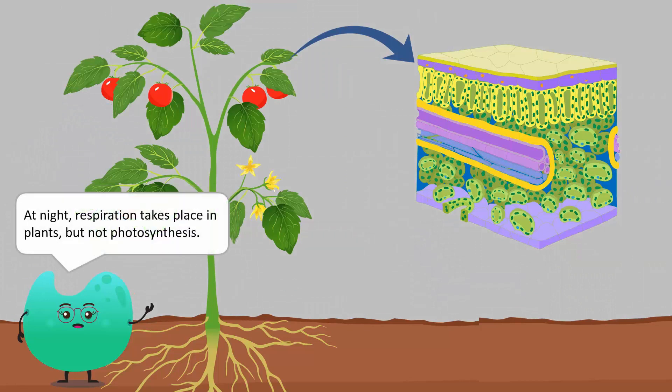At night, respiration takes place in plants, but not photosynthesis. Oxygen from the air diffuses in through the stomata of the leaves, while carbon dioxide diffuses out.